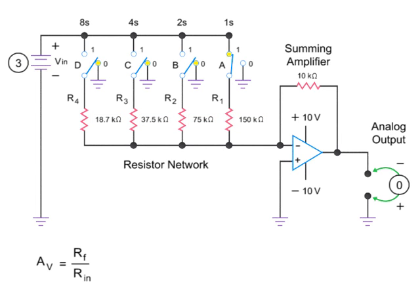Let's look at what happens when switch A is set to logic position 1, or closed. This results in an input resistance to the amplifier of 150 kilohms. Inserting the values into the equation, the gain equals 10 kilohms divided by 150 kilohms, or 0.066.